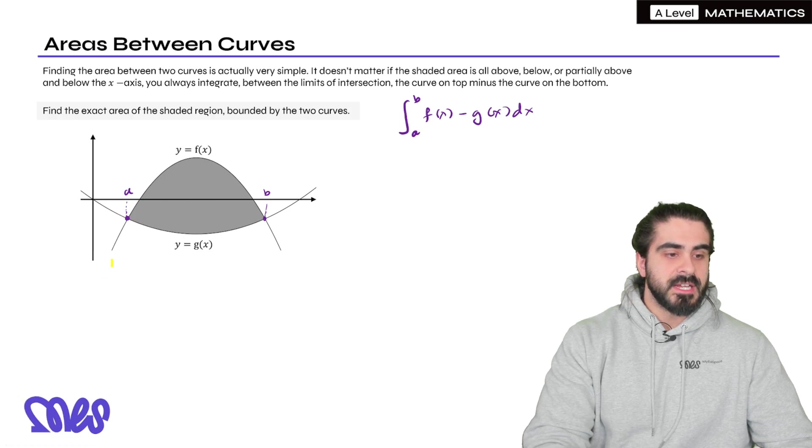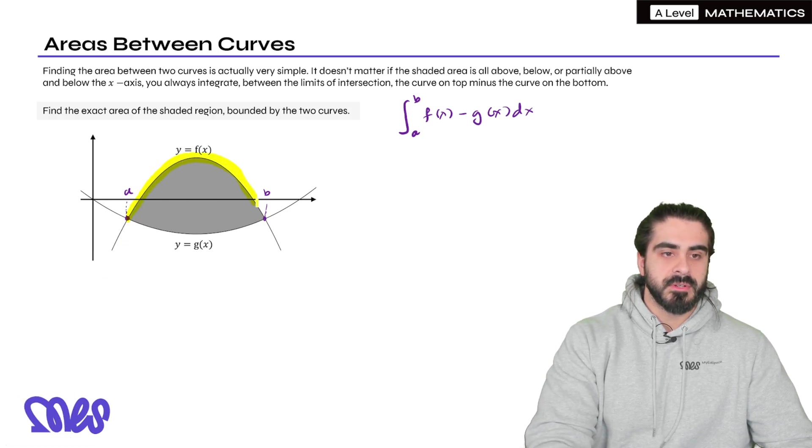One thing you have to clarify is that this curve, this shaded area, is bounded only between the curve on the top and the curve on the bottom, nothing else. There's only two boundaries here.